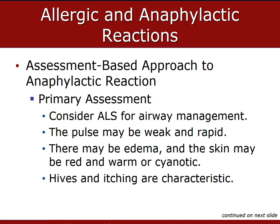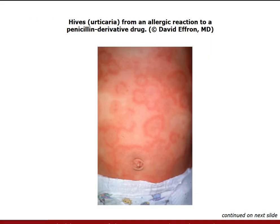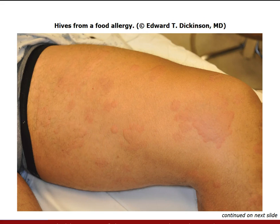The pulse in a patient suffering from an anaphylactic reaction can be weak and rapid. The radial pulse might not be present because of the low blood pressure. Edema or swelling can be obvious in the face, neck, lips, tongue, hands, and feet. The skin can be red and warm, or the patient's skin can be cyanotic from inadequate breathing. You might notice hives — raised red blotches all over the skin. This is known as angioedema from an anaphylactic reaction. Hives are usually accompanied by severe itching.